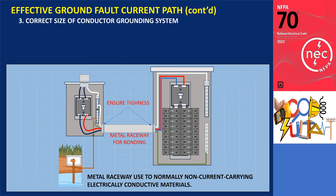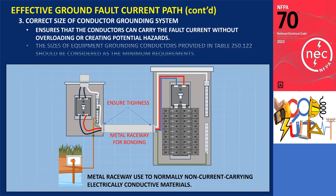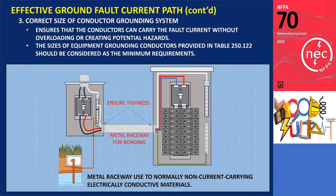Using properly sized conductors is crucial to safely handle the maximum expected fault current, ensuring they can carry fault current without overloading or creating potential hazards. The minimum sizes for grounded conductors, bonding conductors, and equipment grounding conductors can be found in Article 250. The sizes of equipment grounding conductors in Table 250.122 should be considered the minimum requirements, and using conductors that meet or exceed these sizes ensures safety and effectiveness of the grounding and bonding system.